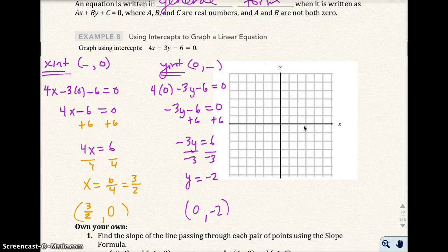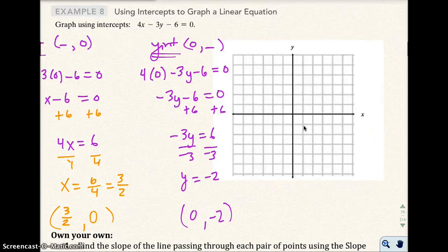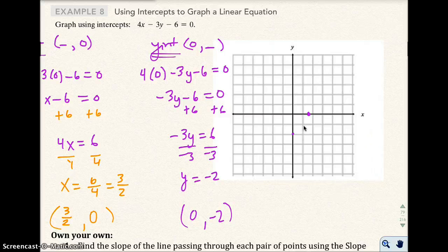So I get 3 over 2 is 1 and 1 half. So 1 and 1 half, 0 is going to be right there. And (0, -2) is right there. And I draw a line. There's my line.